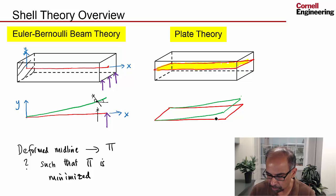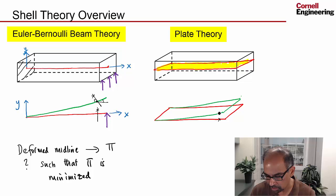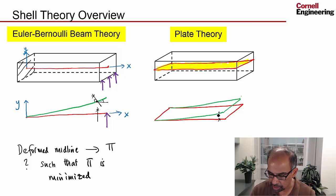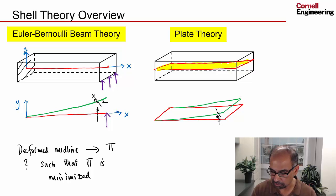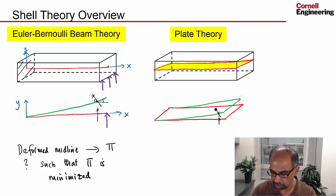If I take a point on the mid-surface, under the influence of a transverse load, it's going to move only in the transverse direction — so it moves over here. Then you say the normals are just going to stay normal: if I had a normal over here, it's going to still remain a normal. So instead of saying the cross section rotates together as a whole, you say the normals rotate together. Which means a point on the normal moves over here accordingly.